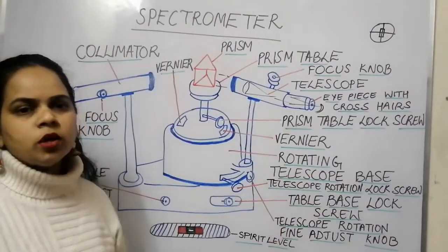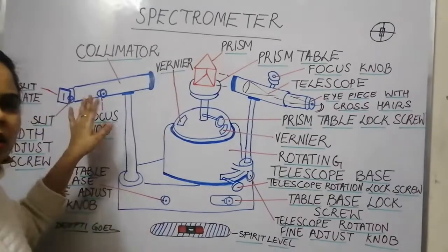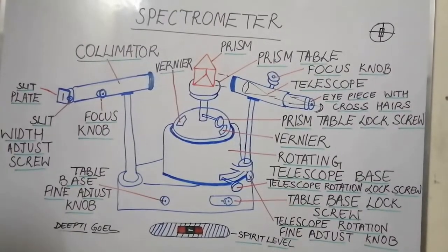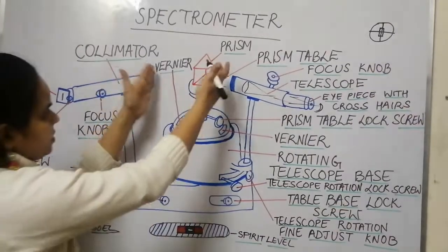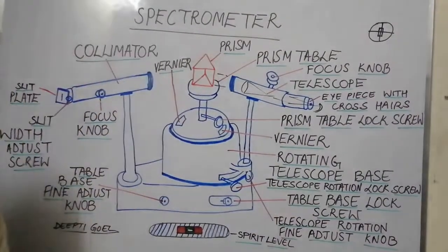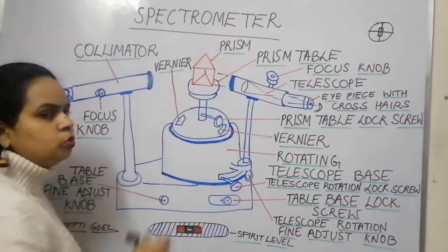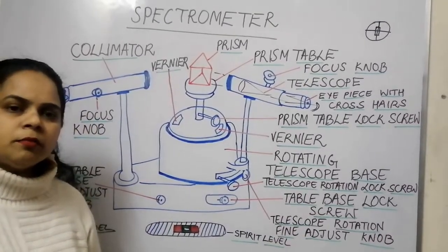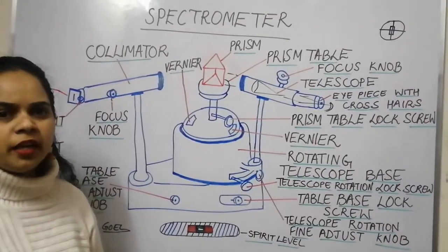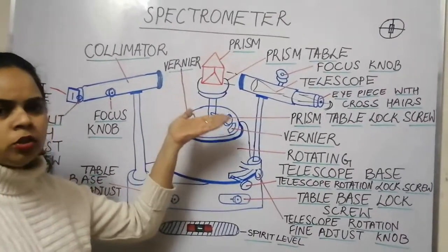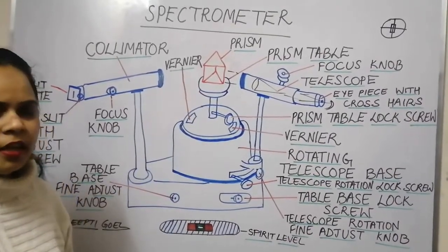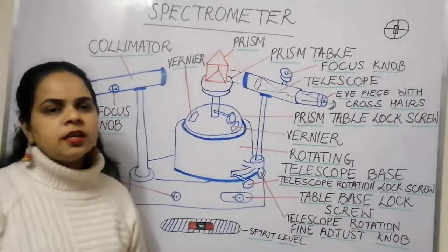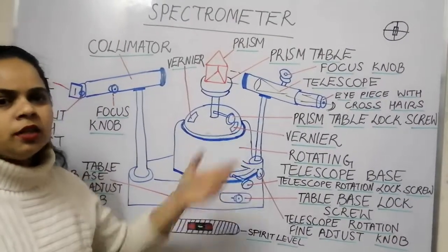The telescope always faces the experimentalist and the collimator always points towards the source of light. The third part of the spectrometer is the prism table — the central platform used for placing optical devices such as a prism, glass slab, or diffraction grating. Processes like reflection, refraction, and diffraction are observed using the spectrometer.